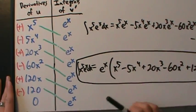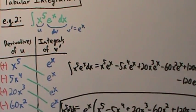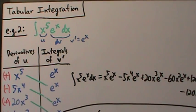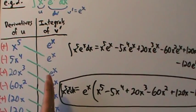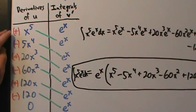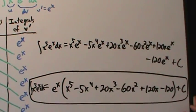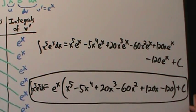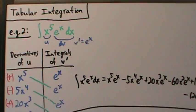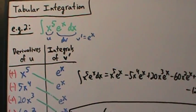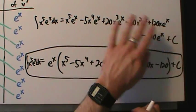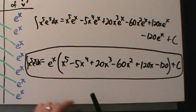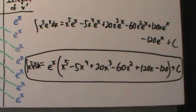So that's tabular integration — that's example two, which illustrates better than example one how useful this is, because this really wasn't a whole lot of work at all. We got lucky with eˣ here, which made it relatively simple. But the process is always the same: derivatives of u, integrals of v', pair them up diagonally, alternate the signs positive-negative, and put it all together. Don't forget the plus C for indefinite integrals. Example three is coming up next.